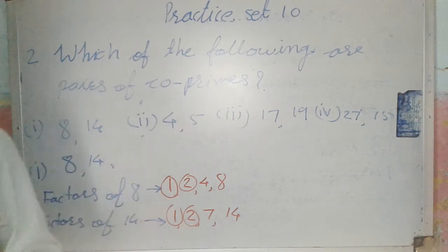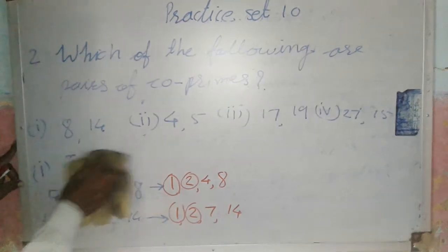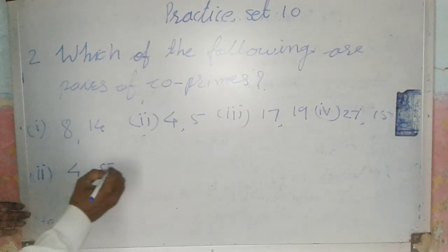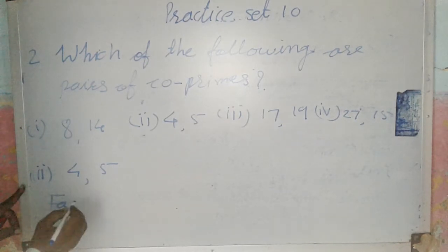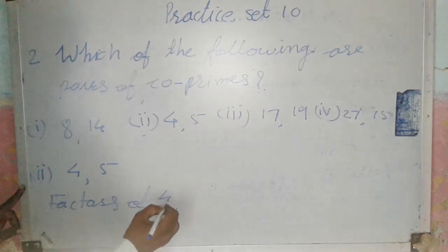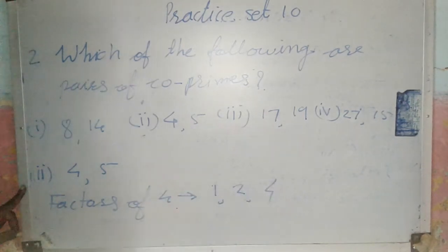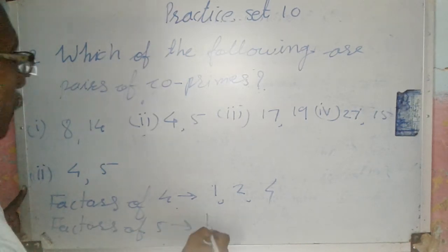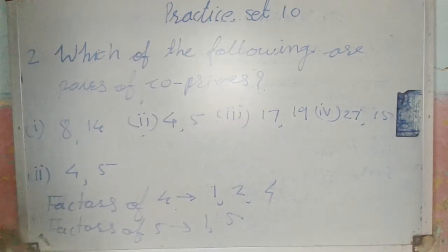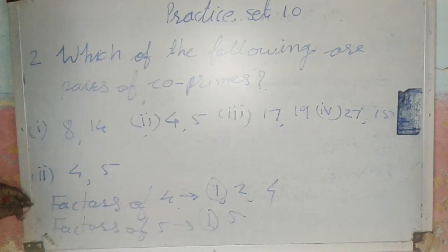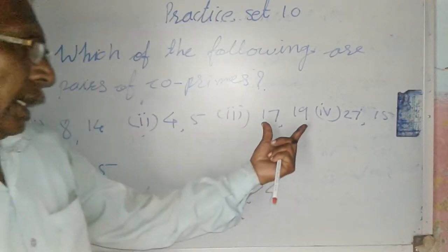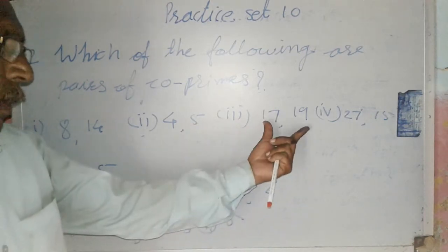Next, consider 4 and 5. Factors of 4 are 1, 2, 4. Factors of 5 are 1, 5. Here, only 1 is the common factor, therefore 4 and 5 are a pair of co-prime numbers. Similarly, 17 and 19 also have only 1 as the common factor, so they are also a pair of co-primes.